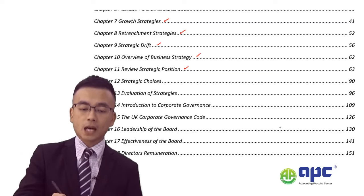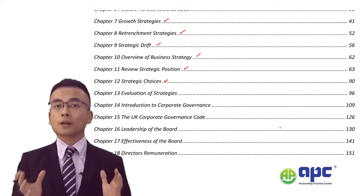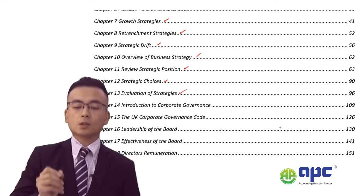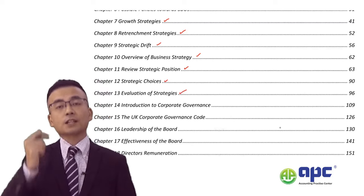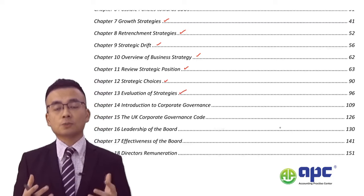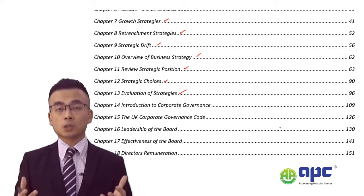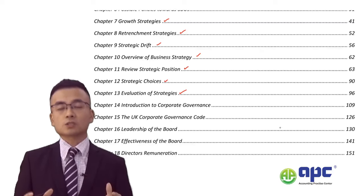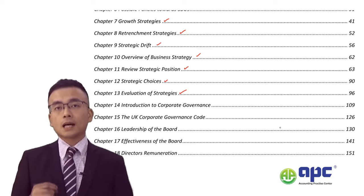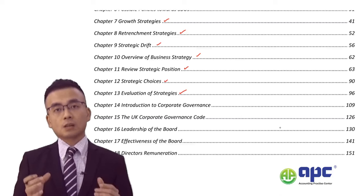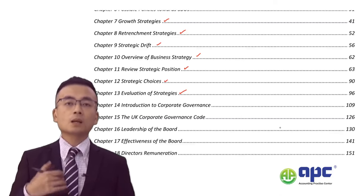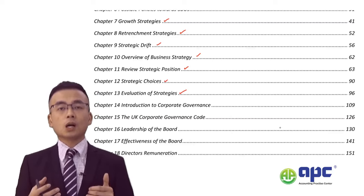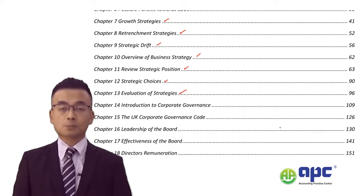We'll then make our own strategic choices — for example, whether we're going to develop new markets or new products. We'll evaluate strategies using the SFA tests: whether the strategy is suitable to the business, whether it's feasible (i.e., whether we have enough money), and whether it's acceptable from the stakeholder's perspective in terms of risks and rewards. In chapter 13, the examiner gives you some strategies and asks candidates to evaluate them, making the use of appropriate models quite important.